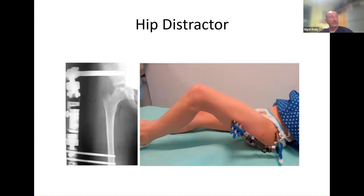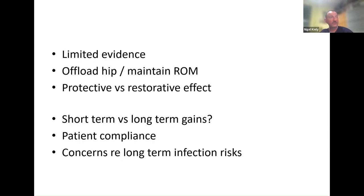In certain centres, people use a hip distractor during Perthes disease — a frame on the outside that stretches out the hip to try to increase the space in the joint. In theory this improves blood supply and allows the hip to reheal in a better environment with less load. However, it's quite an onerous procedure lasting several months with a lot of physiotherapy, and the evidence for it isn't great yet. There are also concerns about pin-site infections around the hip joint.